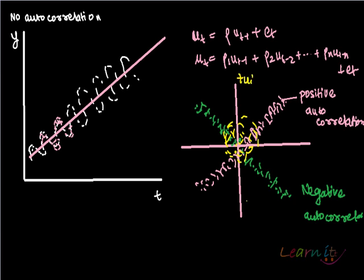Plus ui, minus ui, plus ui, minus ui. So this is the case of no autocorrelation, and this is what we are expecting.